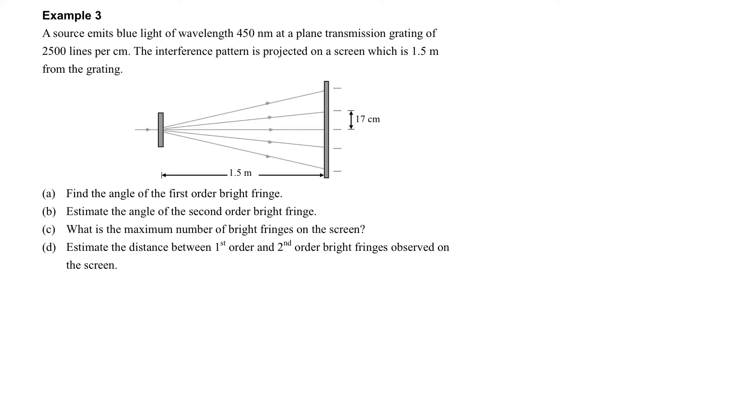This example is another one about the grating. This time we emit a drill-like source with a given wavelength, and we have a grating with 2500 lines per cm. Find the angle of the first order bright fringe, that means our theta one.